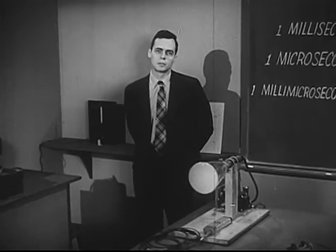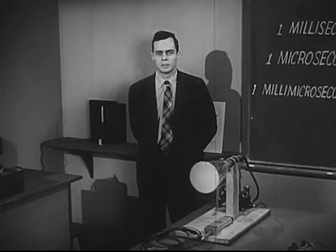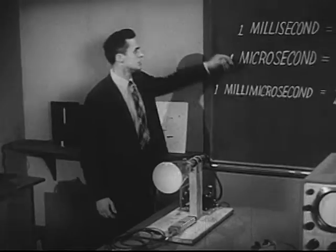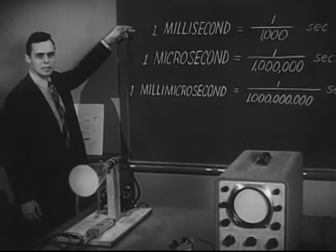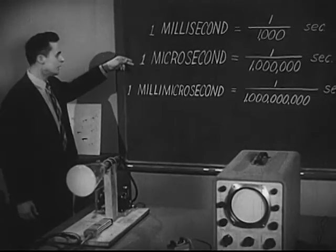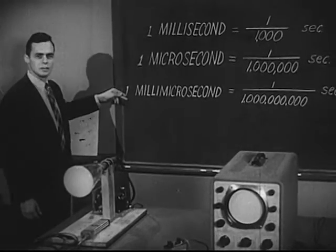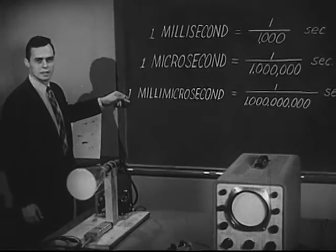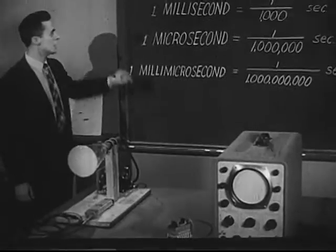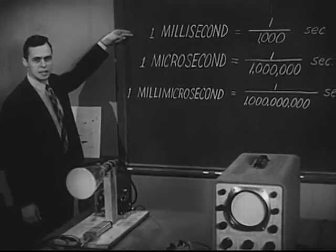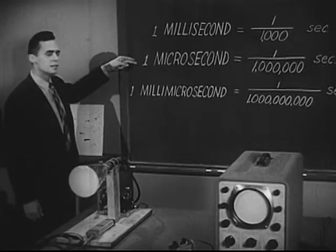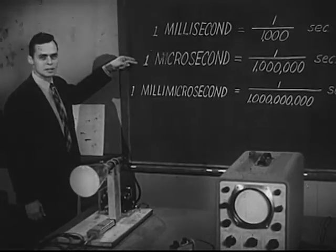As we continue to measure shorter and shorter times, it becomes more and more difficult to refer to them the way we have — nine, ten thousandths of a second, for example. So let's do this: let's call a thousandth of a second a millisecond, a millionth of a second a microsecond, and a thousandth of a millionth of a second a millimicrosecond. Our photographic technique measured events in the millisecond range. Now let's study things that happen a thousand times faster.